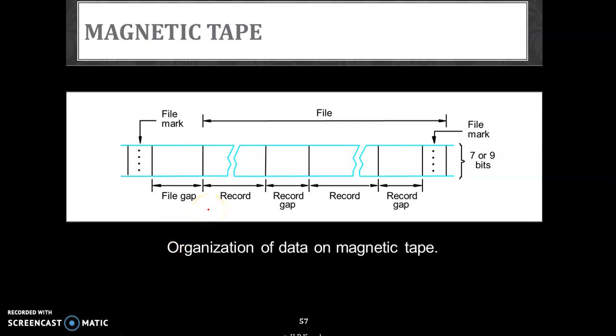This magnetic strip has got - the strip is divided into a section where we will be having a section of file gap. Then we will put the recorded data, and then there is a gap for the other record, and then we have another record. So this record gap will help us in holding two different records. Records will be continuous - they will be having continuous data that is put in. Then this file mark will indicate the start and the end of the file. The size of this magnetic strip will hold somewhere around seven to nine bits of data.